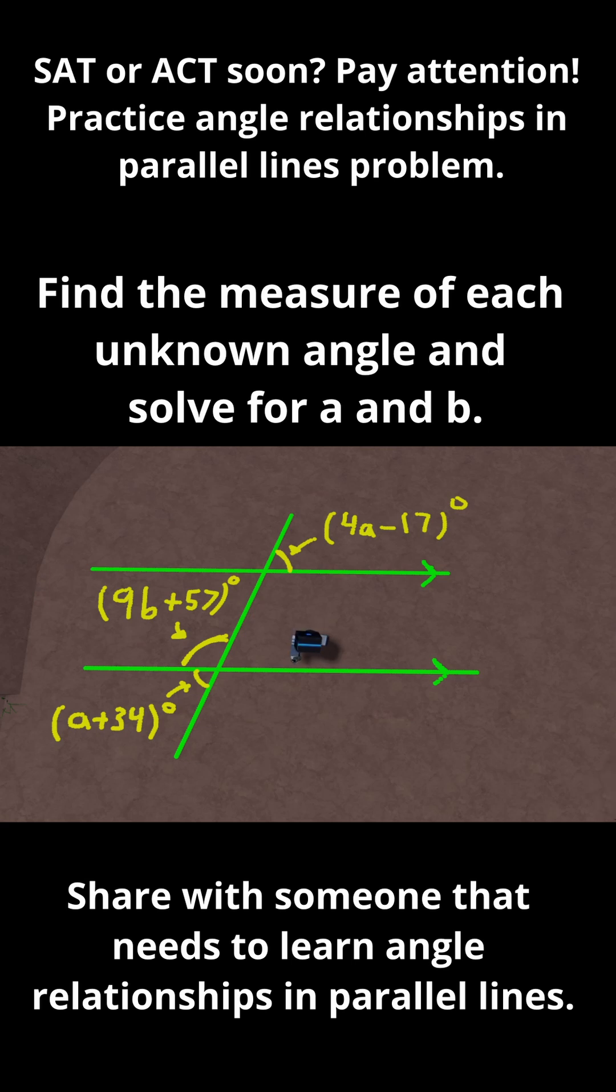First, notice that 4a minus 17 and a plus 34 are alternate exterior angles. What do you know about alternate exterior angles? Well, they're equal to each other.